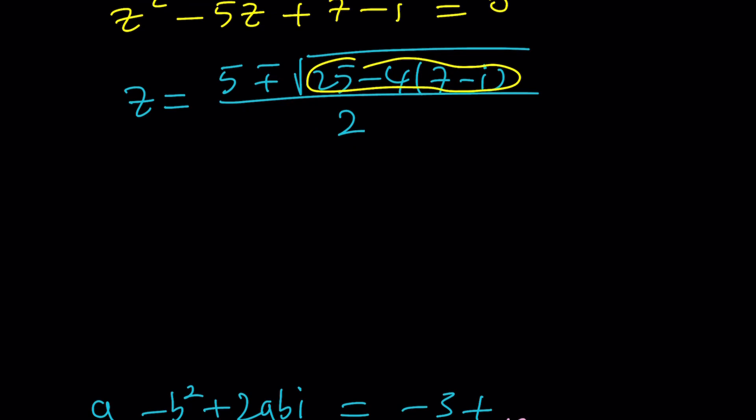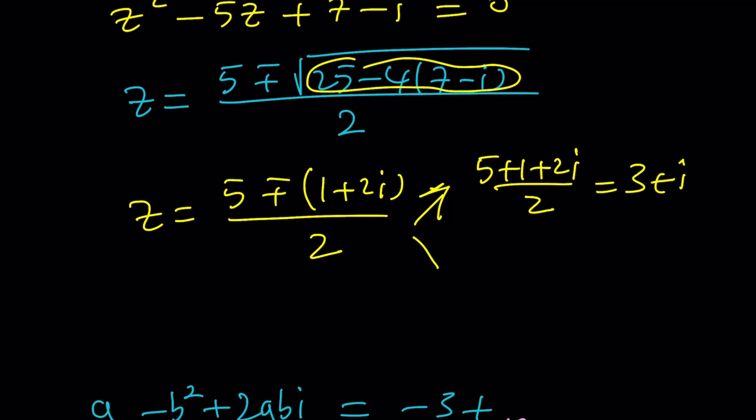So, here's what we get. 5 plus minus 1 plus 2I. I must use parentheses. Divide by 2. And if you split it up, you're going to get 5 plus 1 plus 2I divided by 2, which is 3 plus I. And if you subtract it, 5 minus 1 minus 2I divided by 2, that will be 2 minus I.